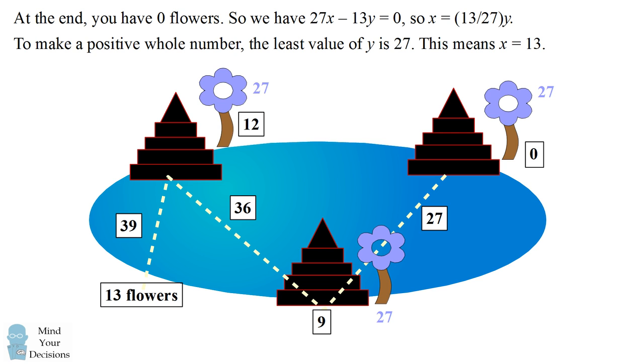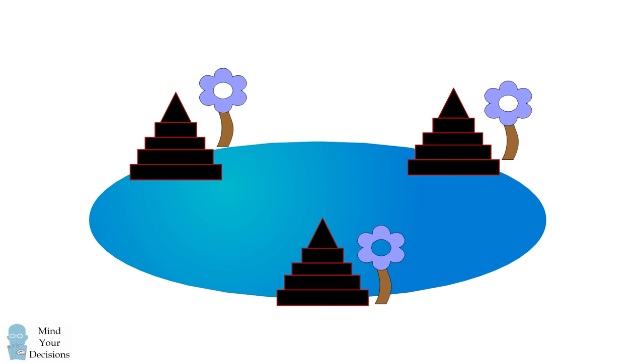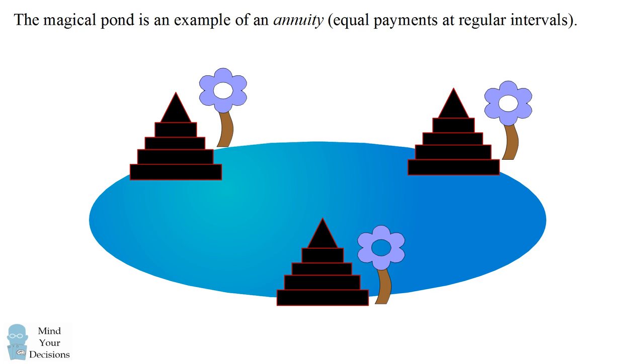Now interestingly enough, the kind of mathematics involved in this problem can actually be applied to financial products. We can reinterpret the problem as an example of an annuity, which is a financial instrument that has equal payments at regular intervals. The number of flowers we place at each temple, y flowers, could be considered having equal payments at regular intervals.